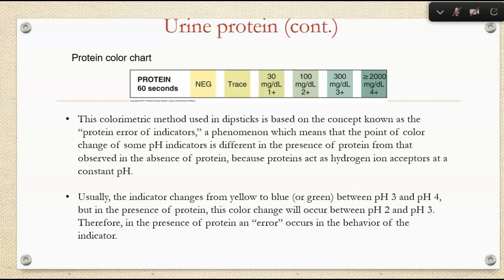When we test for protein, this is something they love to test you on your certification exam. Protein is read by the protein error of indicators, utilizing a pH indicator. We look for a color change in the presence of protein. Protein will act as a hydrogen ion acceptor at a constant pH. Usually the indicator changes from yellow to blue or green between a pH of 3 and 4, but in the presence of protein, the color change occurs between pH 2 and 3.